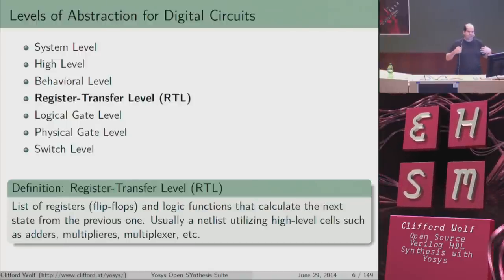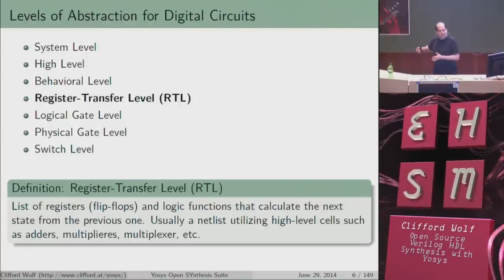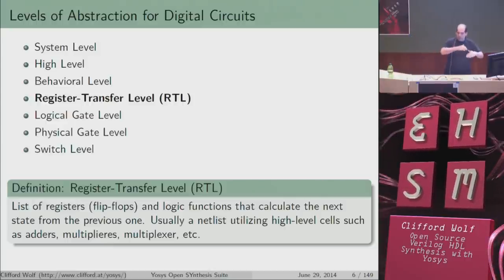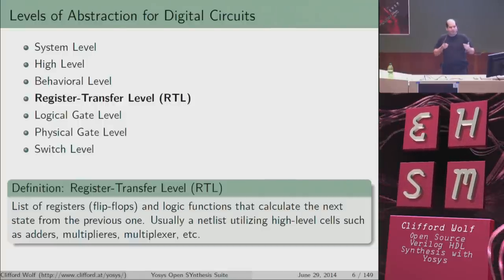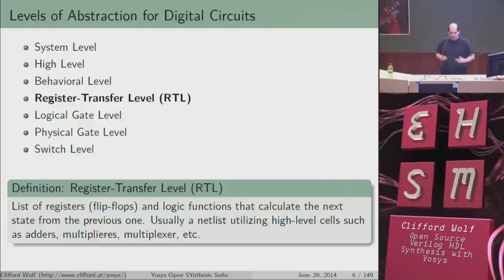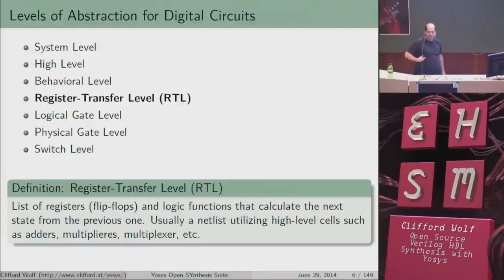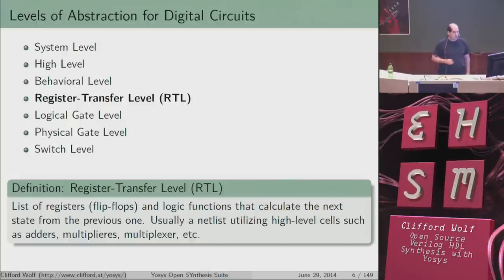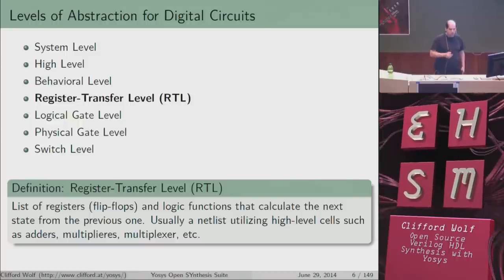Then you have the register transfer level, which is already more what you'd expect from a digital circuit. Basically it's the flip-flops in your design and the transfer functions used to calculate the next state based on the current state. One representation of this is a netlist with flip-flop cells and other cells like adders and multiplexers — all the things you might use to describe a digital circuit without going down to gate level.